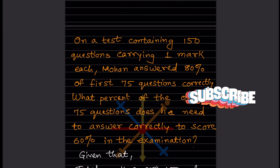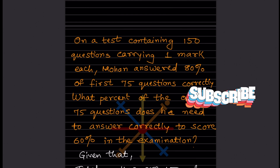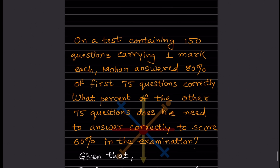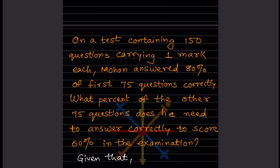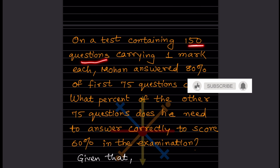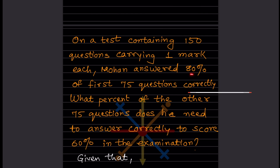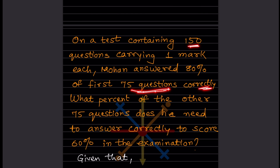Hi learners, welcome to my YouTube channel. Today we are going to see this question: on a test containing 150 questions, carrying one mark each, Mohan answered 80% of the first 75 questions correctly. What percent of the other 75 questions does he need to answer correctly to score 60% in the examination?